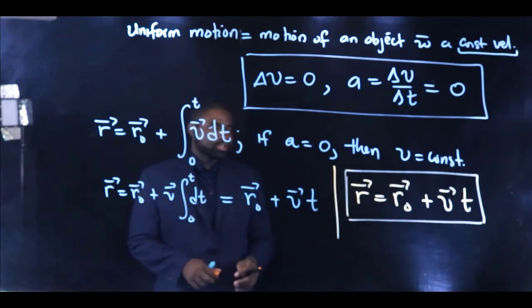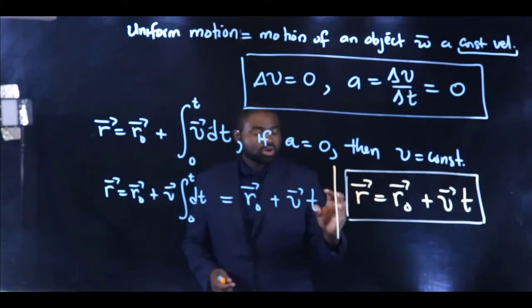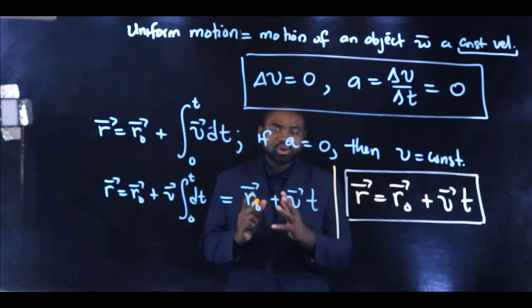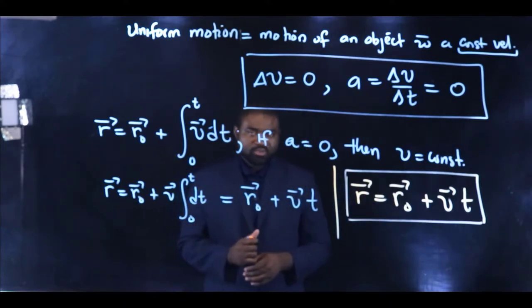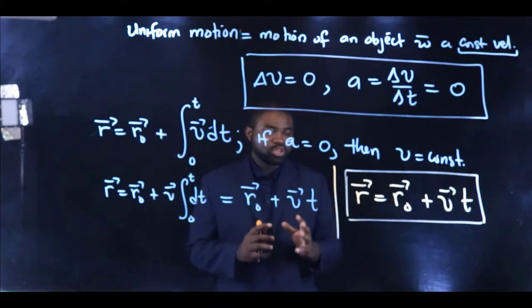In other words, this equation is a model that we can use to predict the motion of an object that is moving with a constant velocity.